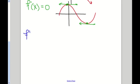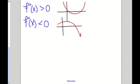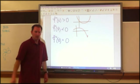If f double prime of x is greater than 0, then our graph is concave upward. If f double prime of x is less than 0, that tells us that our graph is concave downward. And then the last piece of the puzzle is what if f double prime of x is equal to 0?